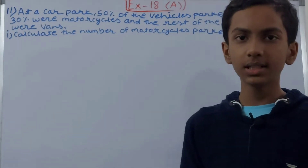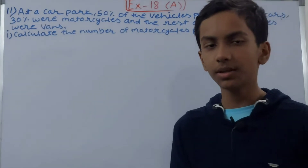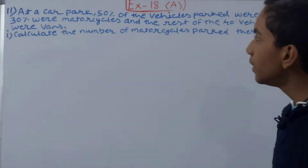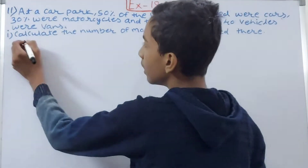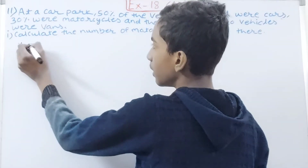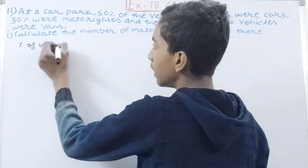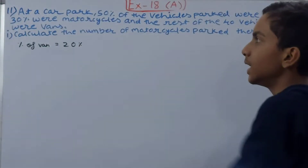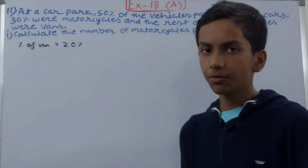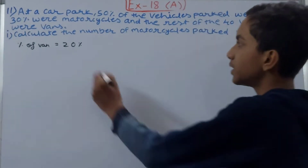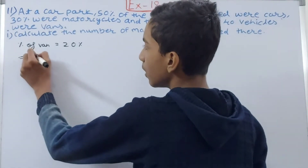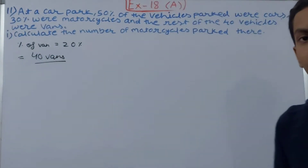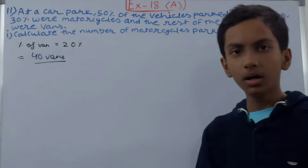First we need to find the total number of vehicles in the entire park, then only we can find the total number of motorcycles. We know that the percentage of vans is 20%, because 50 plus 30 is 80, and 100 minus 80 is 20%. So 20% equals 40 vans.